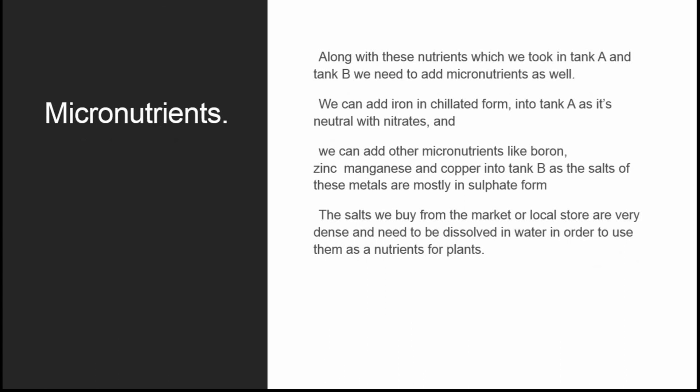The whole concept of Tank A and Tank B is based on the basic chemistry of nitrates and sulfates. Along with the nutrients in Tank A and Tank B, we need to add micronutrients as well. You can either make a Tank C for your micronutrients, or you can add iron in chelated form into Tank A, since chelated iron is neutral with nitrates. For those who cannot afford Tank C, we suggest adding micronutrients like boron, zinc, manganese, copper, and molybdenum into Tank B, as the salts of these metals are mostly in sulfate form.